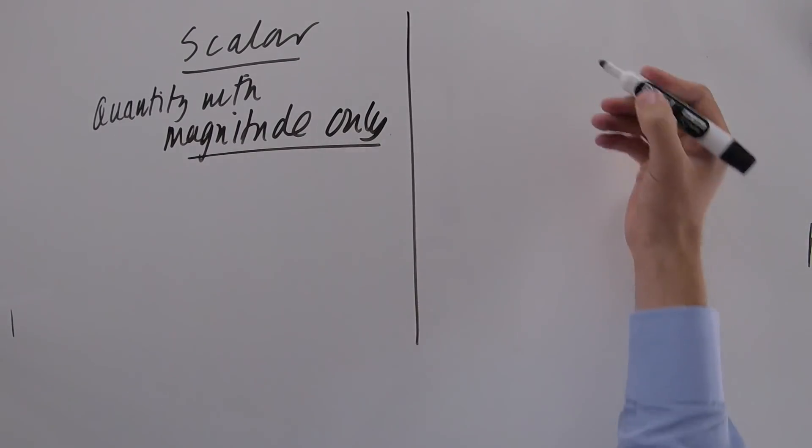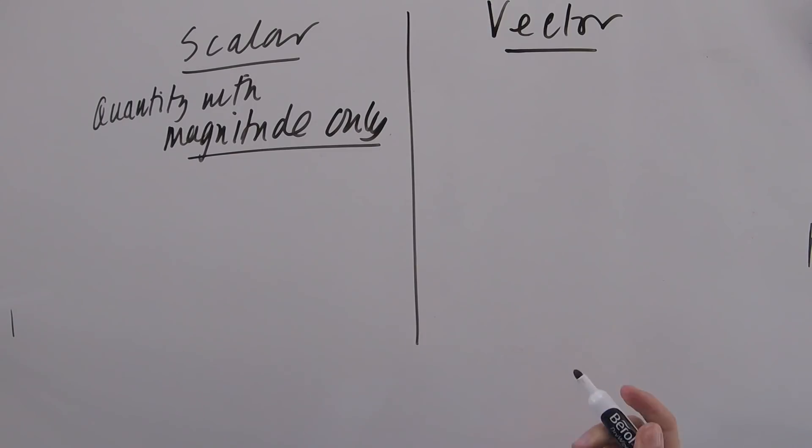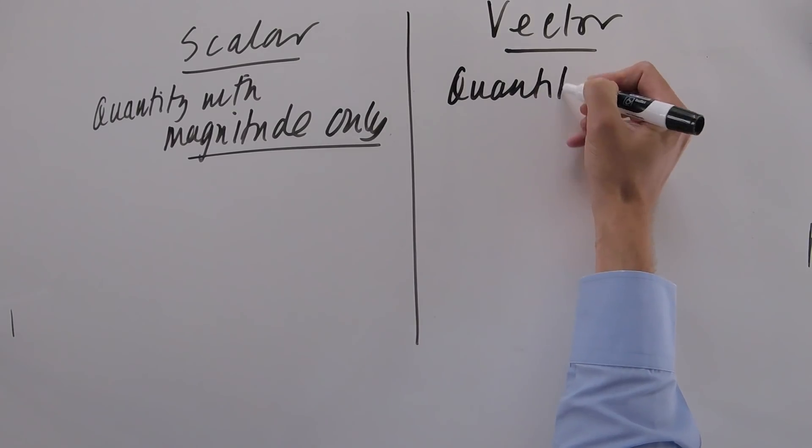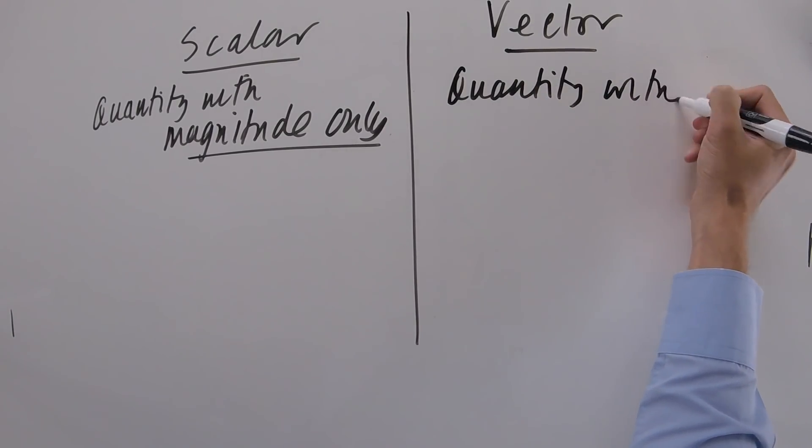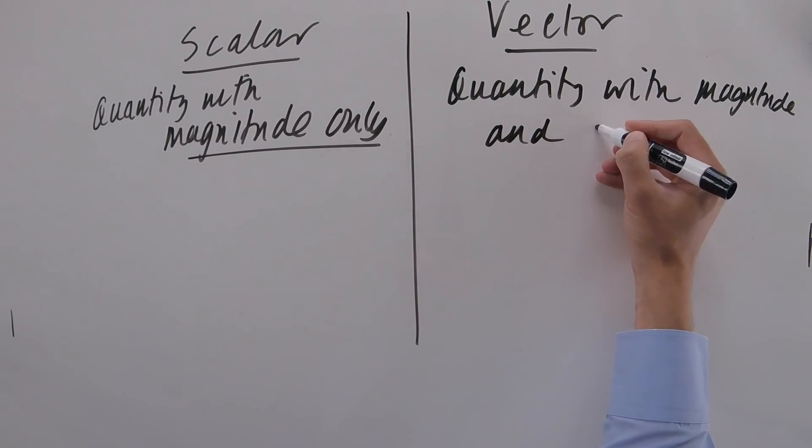So it's magnitude only. A vector, this is a quantity, again a thing, something we can measure with, so it's a quantity with magnitude and direction.